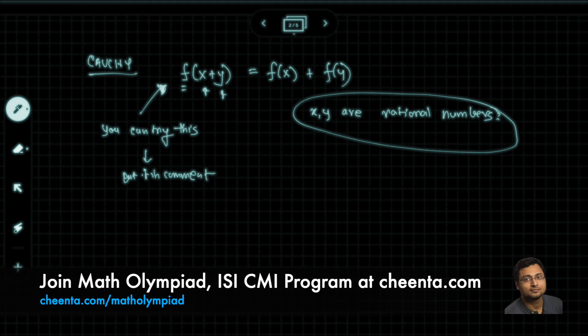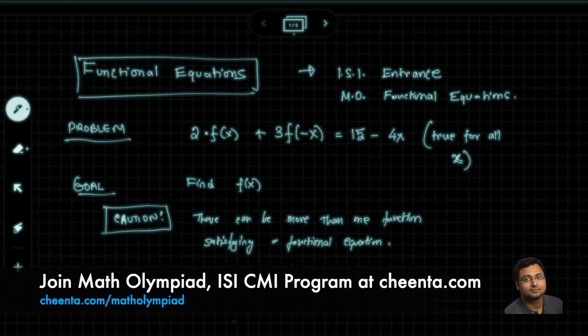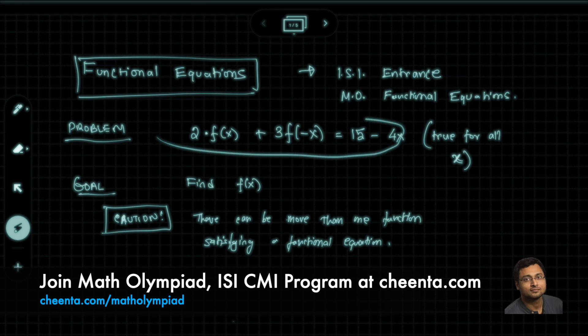Alright, now let's get back to this particular problem: 2 times f(x) plus 3 times f(-x) is equal to 15 minus 4x. How can we solve this? Solve for f(x).